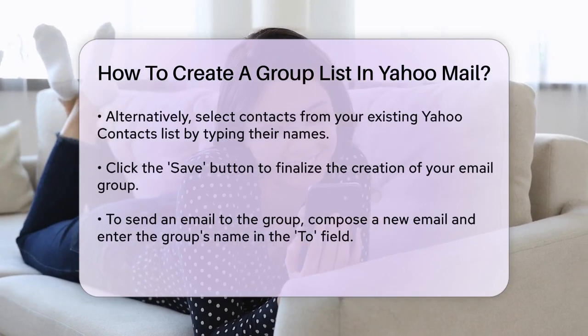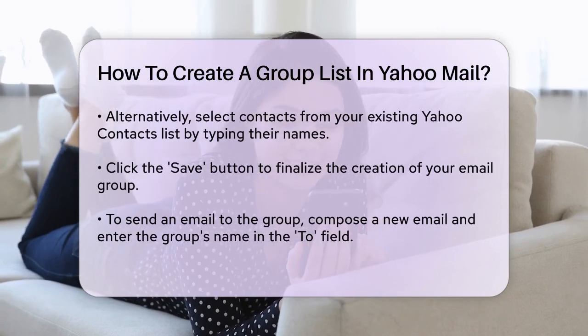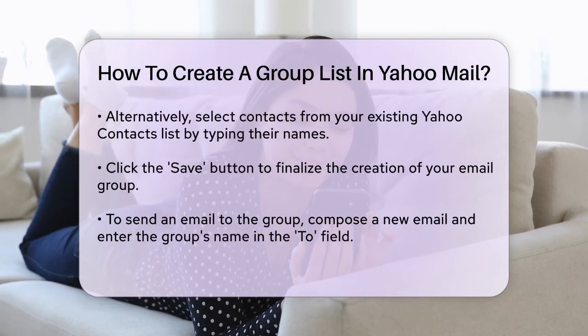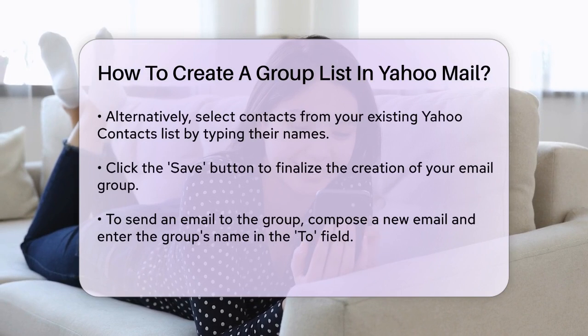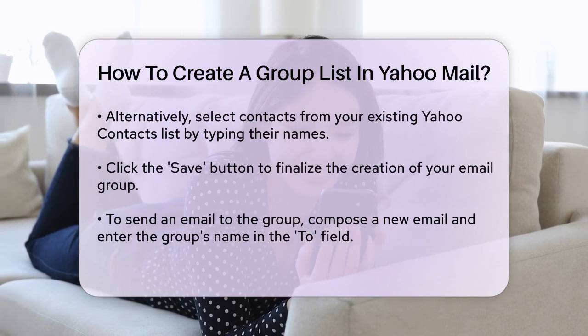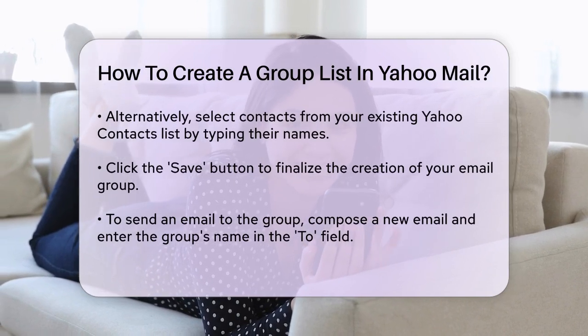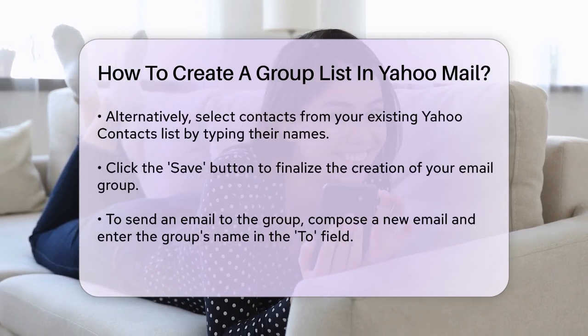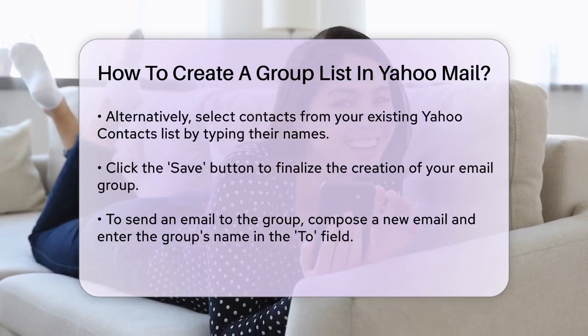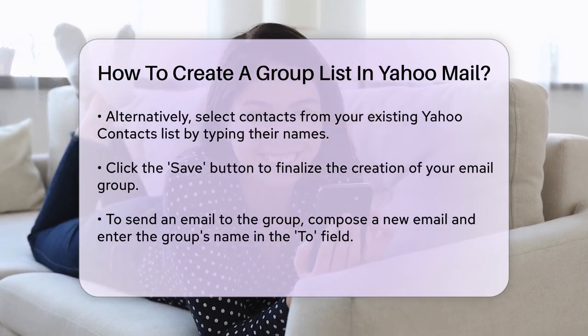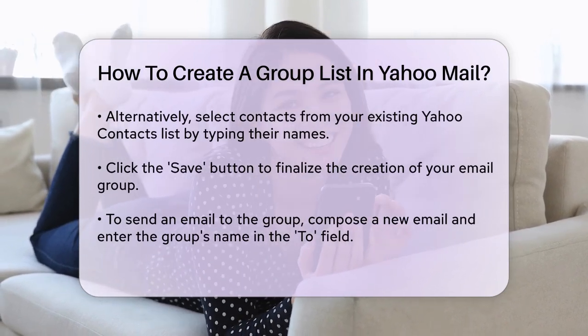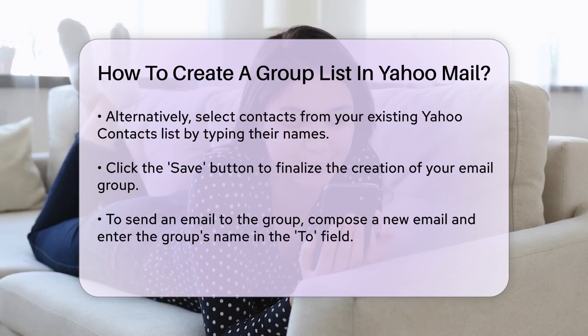Once you've added all the contacts you want to include in the group, click the Save button. Your email group is now created and can be accessed from the Lists tab in the Contacts section of Yahoo Mail.